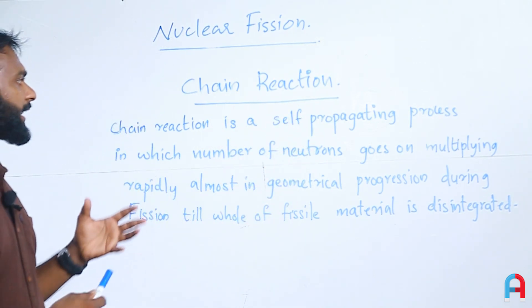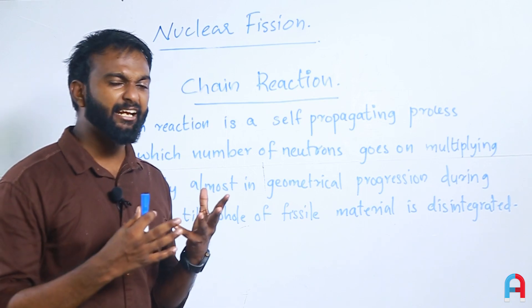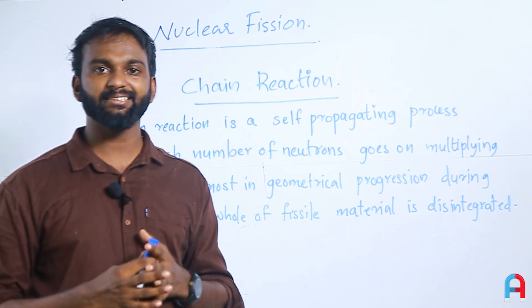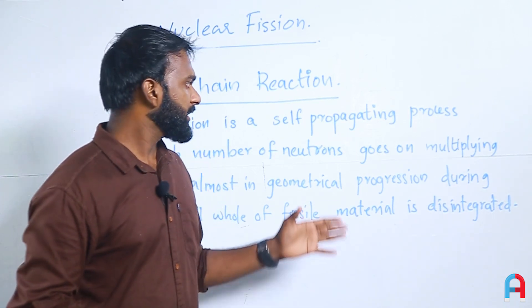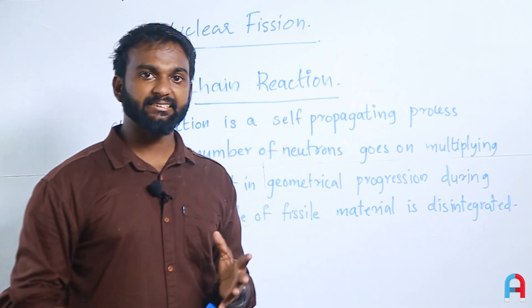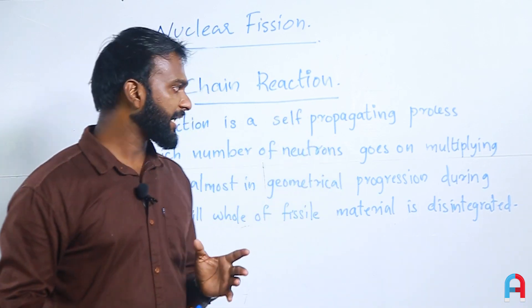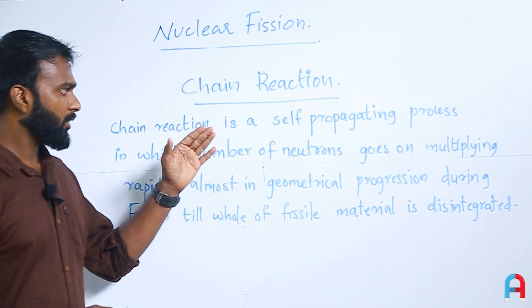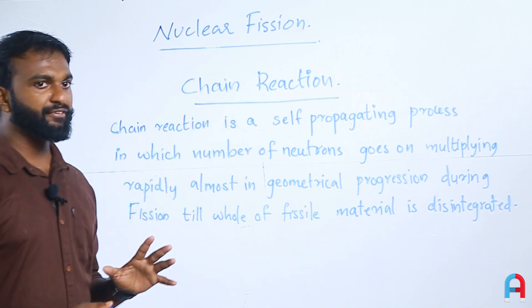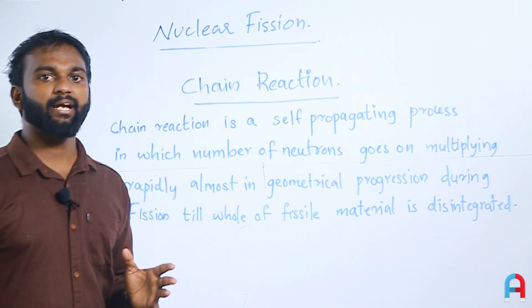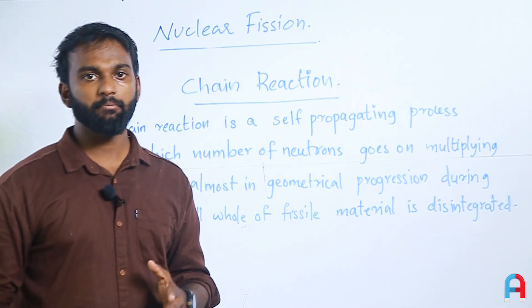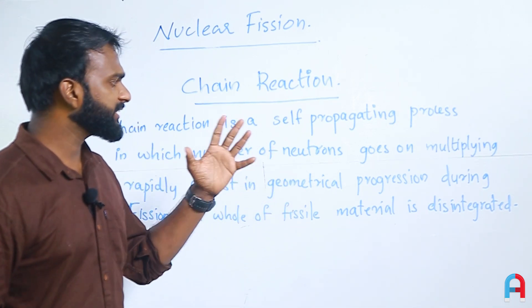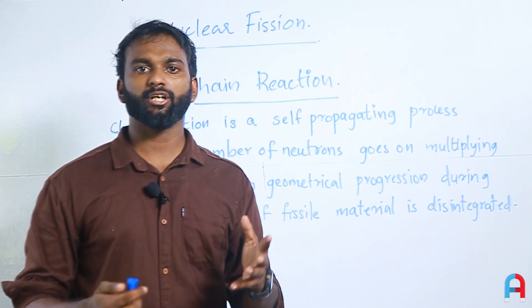Chain reaction is a rapid process in which it is self-propagating — it does not require an external agent. It is the chain reaction itself that sustains the reaction. Nuclear fission proceeds in steps in which the number of neutrons increases rapidly, almost in geometrical progression.